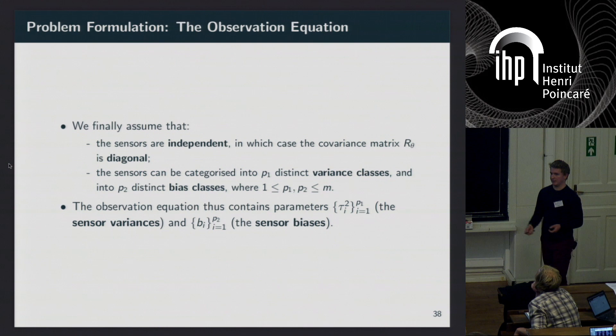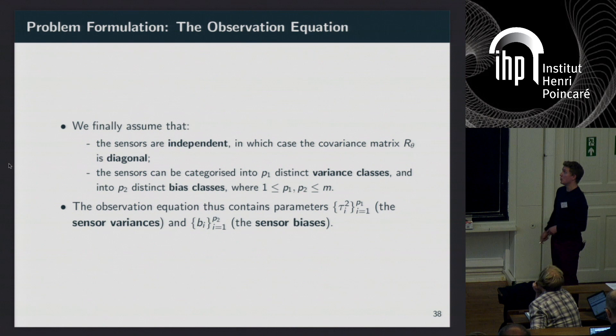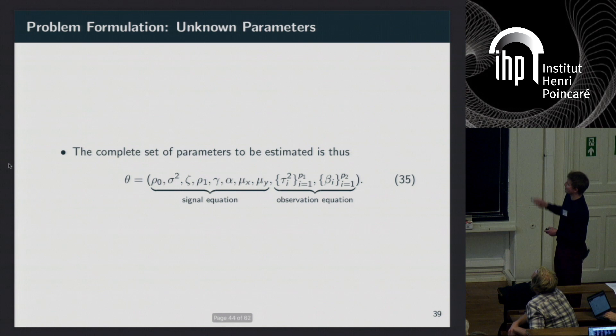We assume sensors are independent and can be categorized into two classes: variance classes, where sensors in the same class are assumed to have the same variance, and bias classes, where sensors in the same class are assumed to have the same bias — both are estimated. The observation equation therefore contains P1 variance parameters and P2 bias parameters. That is the complete set of parameters which we need to estimate.